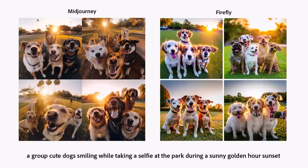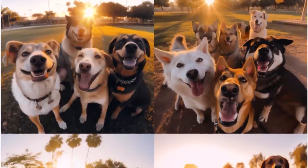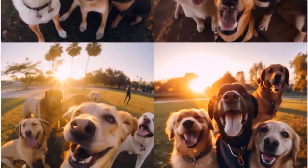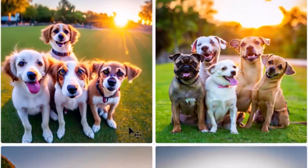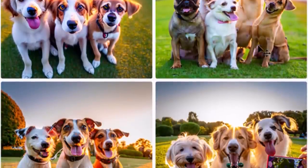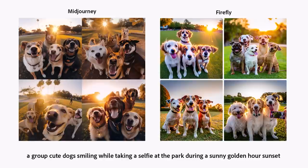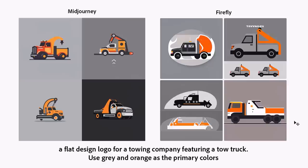Then I tried a group of cute dogs smiling while taking a selfie at the park during a sunny golden hour sunset. There is no question — Mid Journey is a clear winner in this case. The results in Firefly have issues and distortions I wasn't very happy with, and all the images Mid Journey generated look pretty good. Then I tried a flat design logo for a towing company featuring a tow truck, using gray and orange as the primary colors. They both did a good job fulfilling my prompt; I just happen to like the Mid Journey design a little bit better.